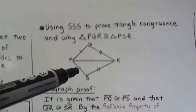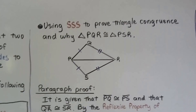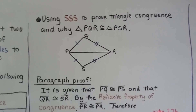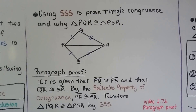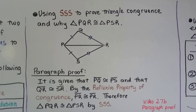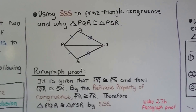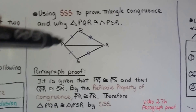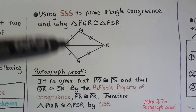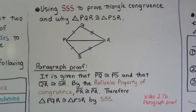We can see this side is congruent to this, and this side is congruent to this. So we can write a paragraph proof. It is given that segment PQ is congruent to segment PS — given in the diagram with the congruent marks.